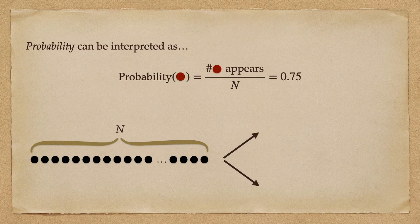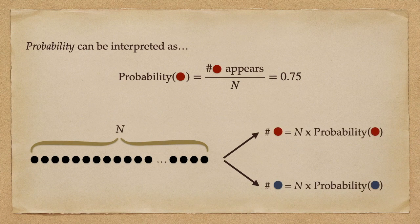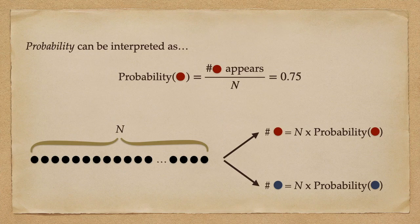Thus, as n increases, the number of red balls in the sequence tends to n times the probability of getting a red ball, and analogously for the blue ones.